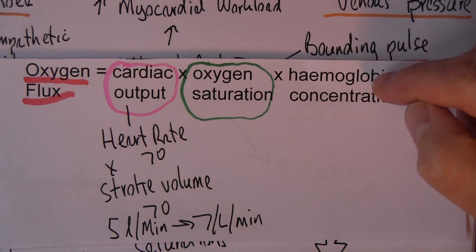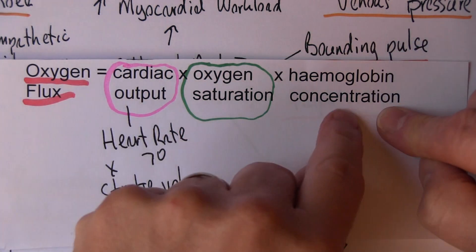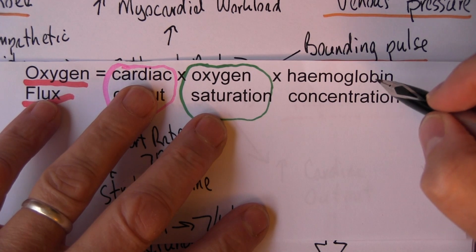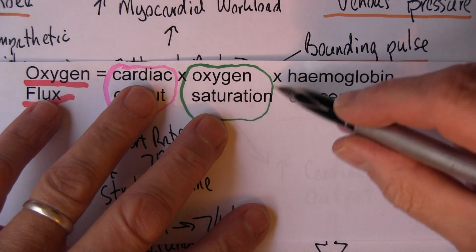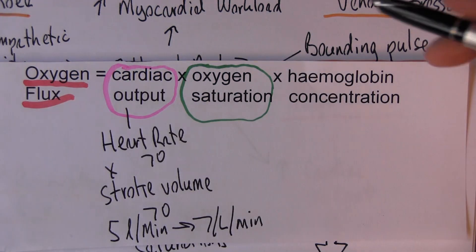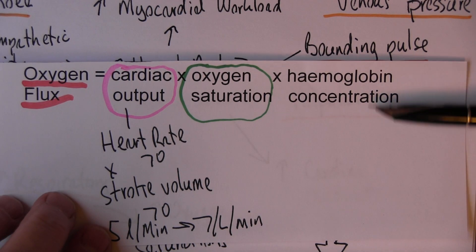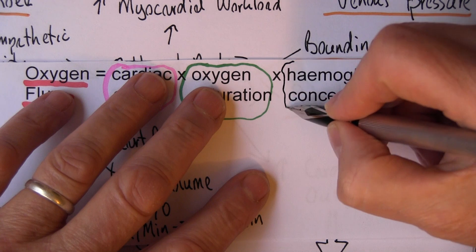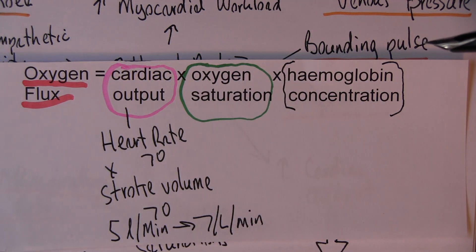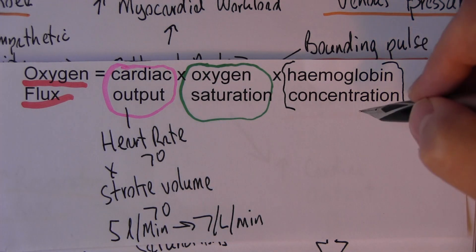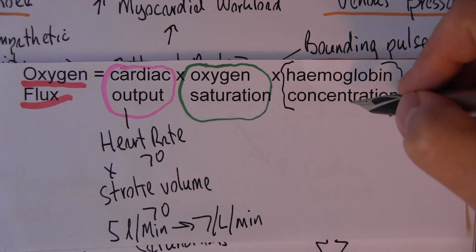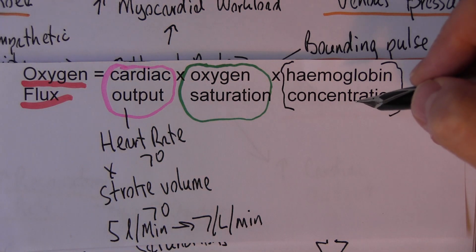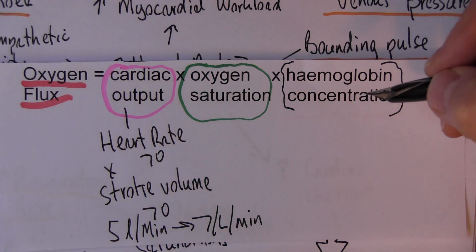Oxygen flux is increased by raising cardiac output beyond normal and maximising oxygen saturation. Oxygen flux is also dependent on haemoglobin concentrations, but the whole problem in anemia is that haemoglobin is insufficient. The oxygen lack will stimulate the kidneys to produce erythropoietin, but if the bone marrow does not have enough iron, B12, or folic acid to make red cells, the compensatory increase in haemoglobin unfortunately won't be available. However, if you give iron, B12 injections, or folic acid as appropriate, then the patient will be able to compensate.